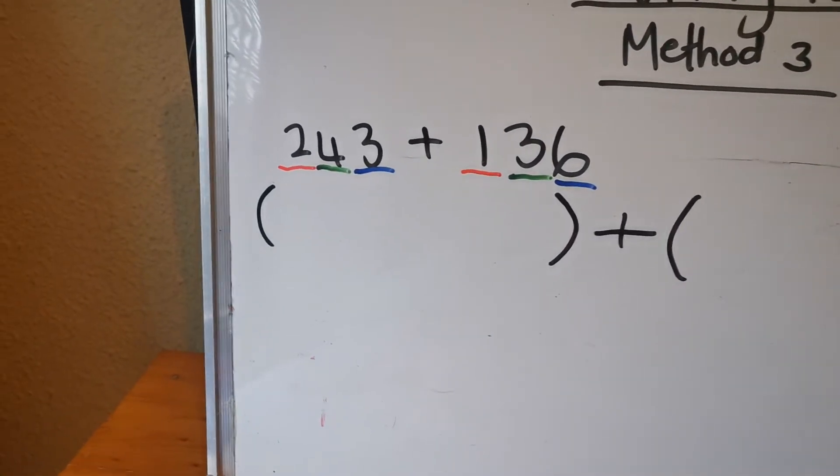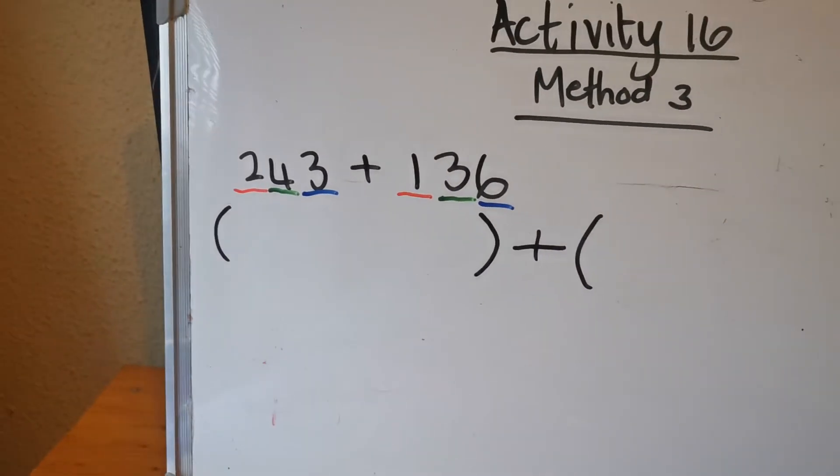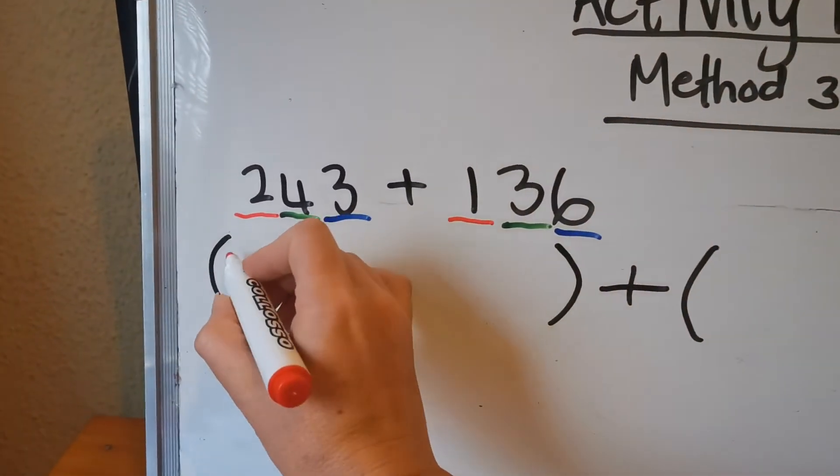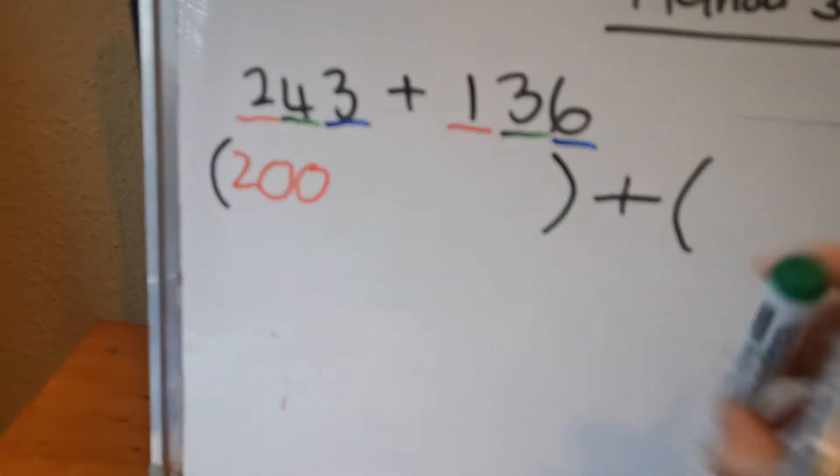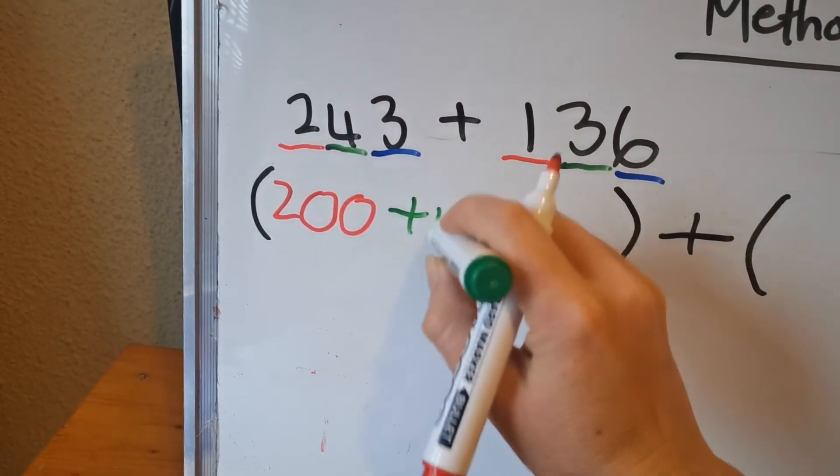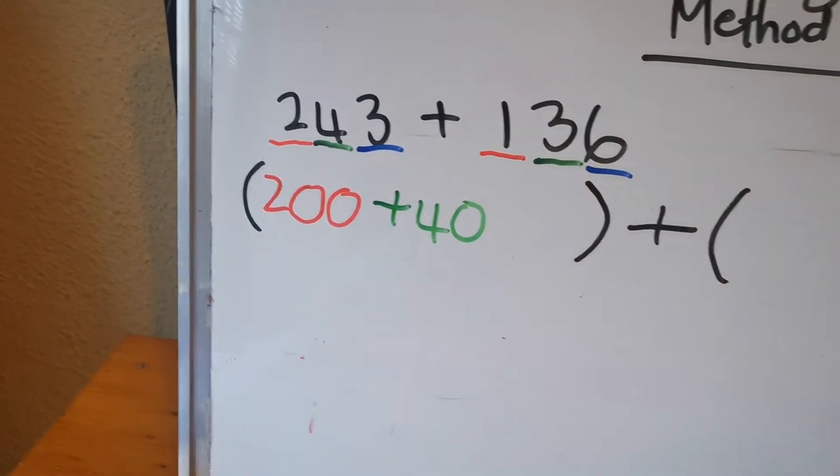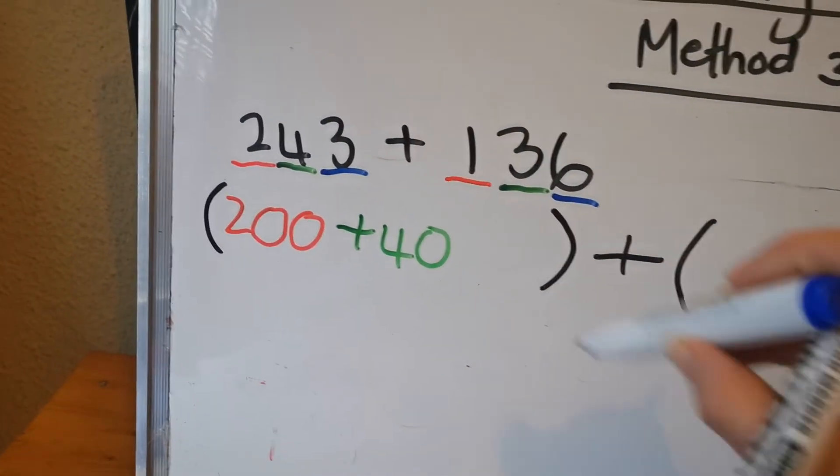So now I want you to write it out in 100, tens and units. So you're going to write 200 plus 40 plus 3.